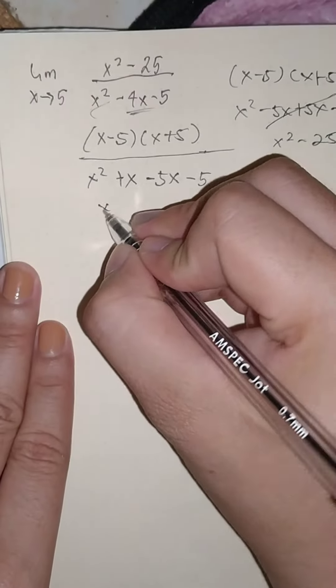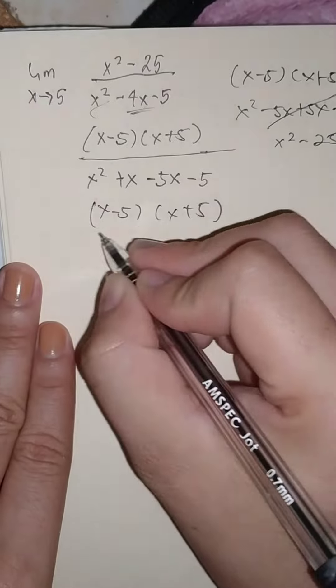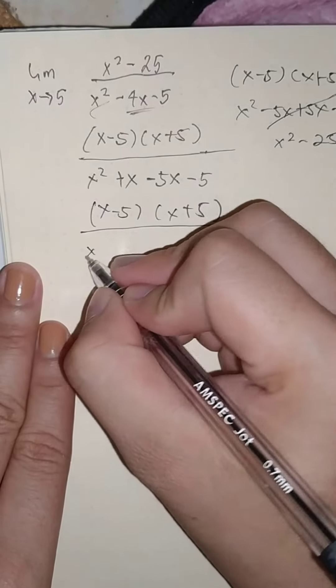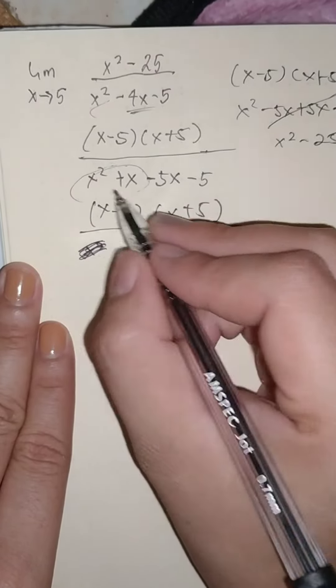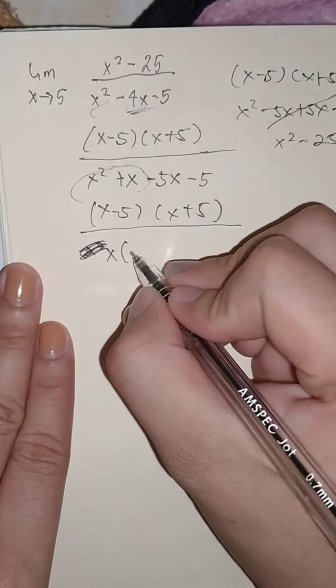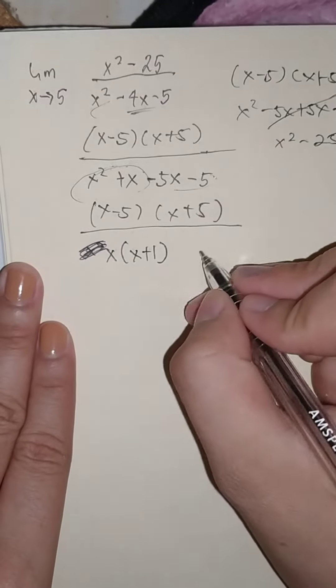Okay, so we have x minus 5, x plus 5. Then down here, x squared—we can factor x, which is x from x plus 1, and we can factor out 5 here, which is negative 5.